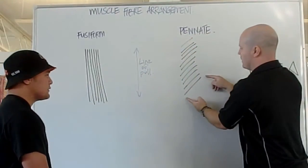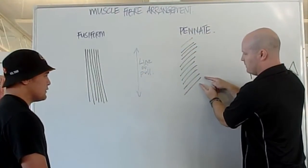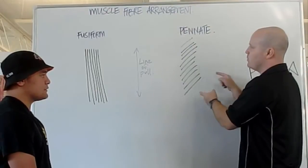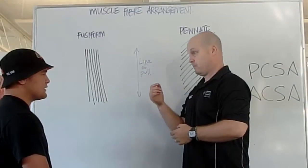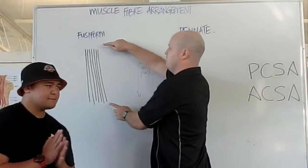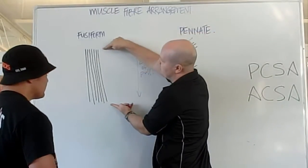Whereas our pinnate, when they shorten, they can only shorten this far. So the more something shortens, the better it is going to be at speed. So fusiform is good for speed because they shorten a lot.